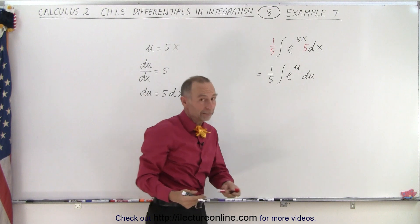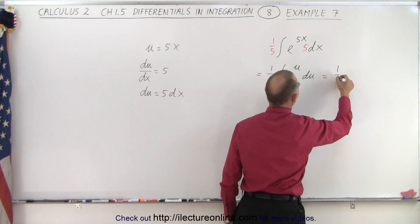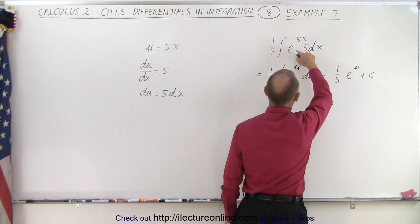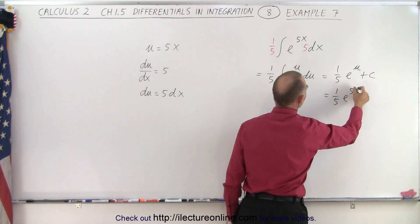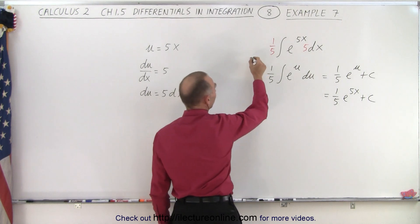Well, when you integrate that, you simply get e to the u. So this would be equal to 1/5 times e to the u plus the constant of integration. And then, since u equals 5x, you can say that's equal to 1/5 e to the 5x plus the constant of integration.